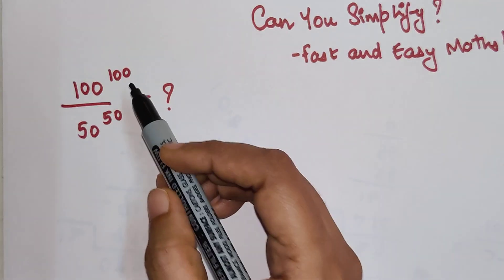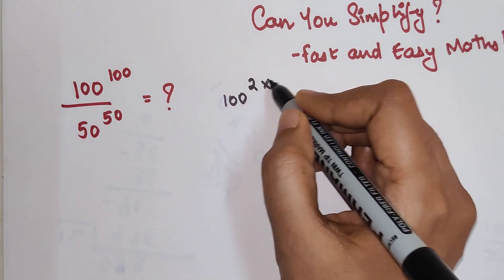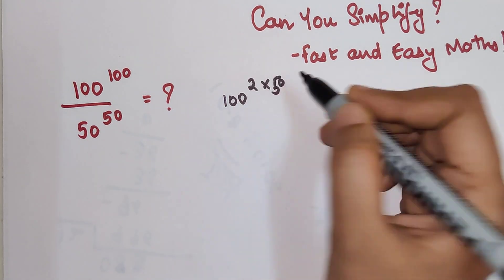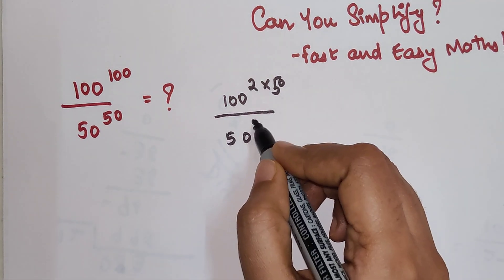But here I can write 100 as nothing but 2 times 50. And we have 50 raised to 50.